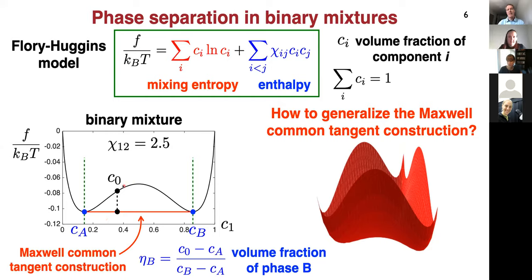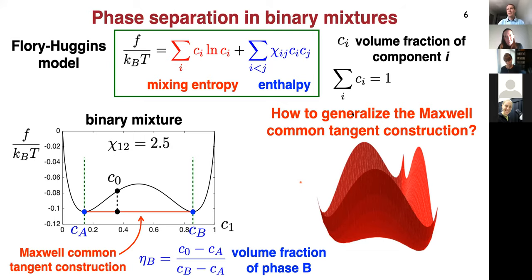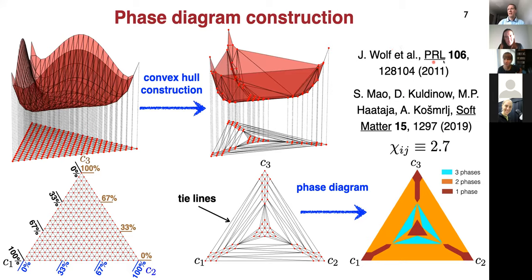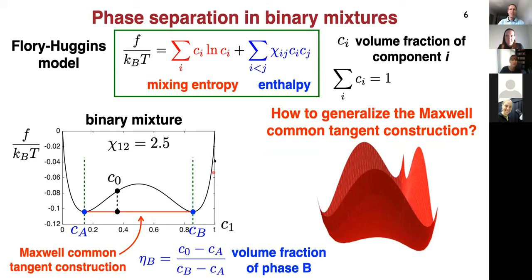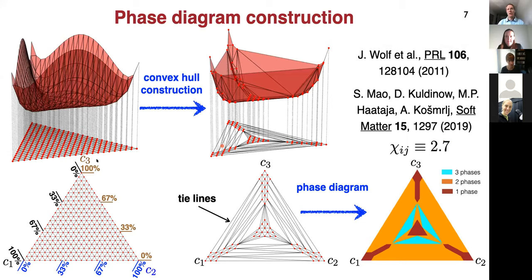If we generalize from binary to multicomponent mixtures, we're dealing with a free energy function in a multidimensional space. It is still possible to generalize the common tangent construction — now we're looking at common tangent hyperplanes, and the attachment points give the compositions and number of coexisting phases. Here we employed a trick from a PRL paper about a decade ago from Fabrice Thalmann and Carlos Marques's group, where they figured out you can use convex hull construction to convexify the free energy.